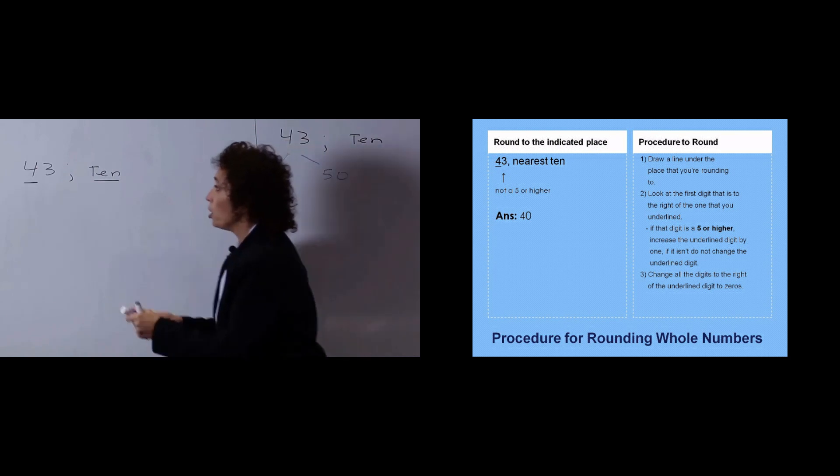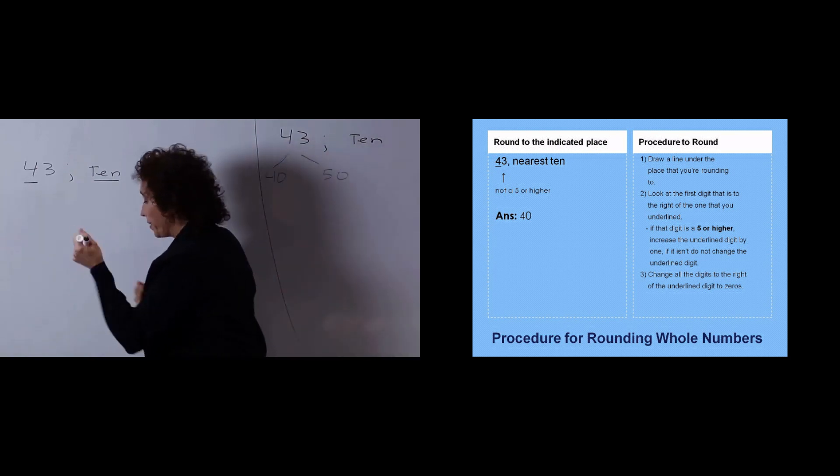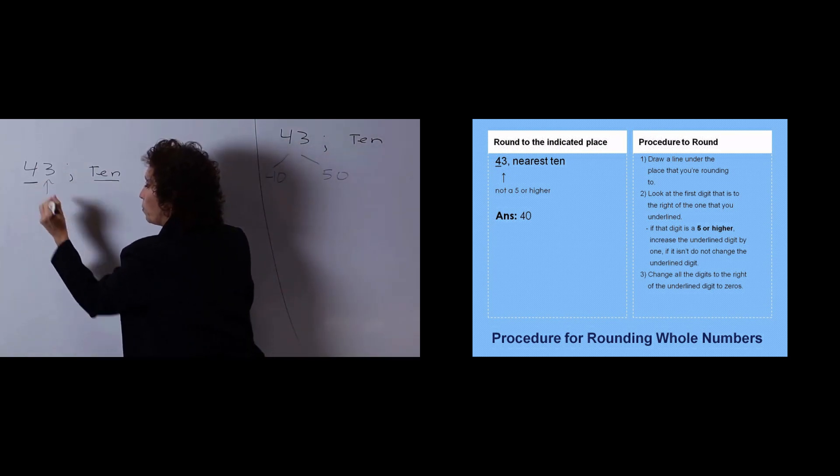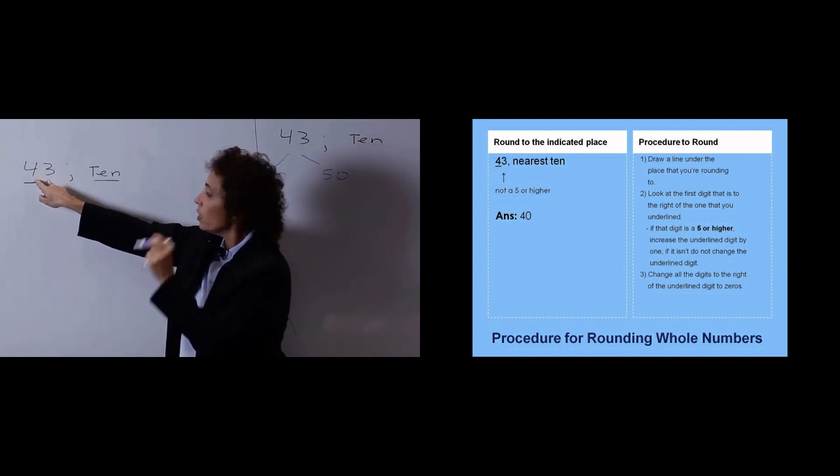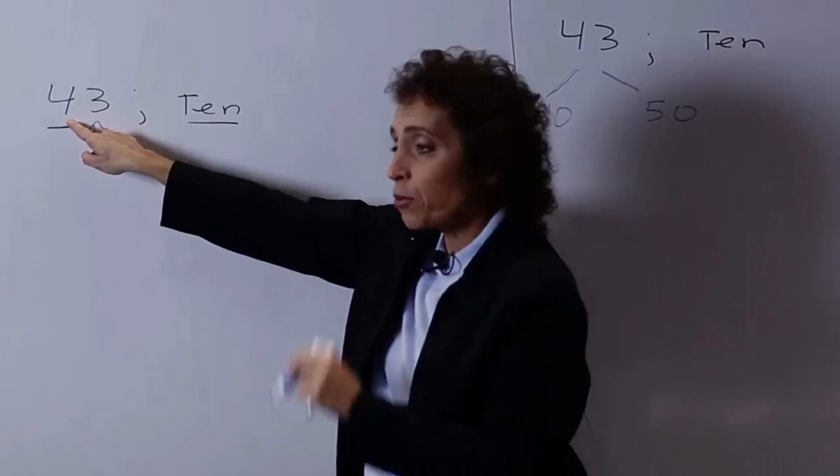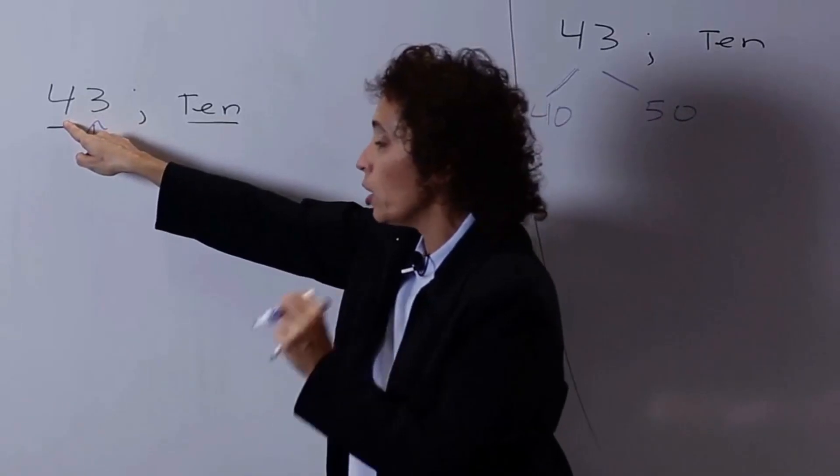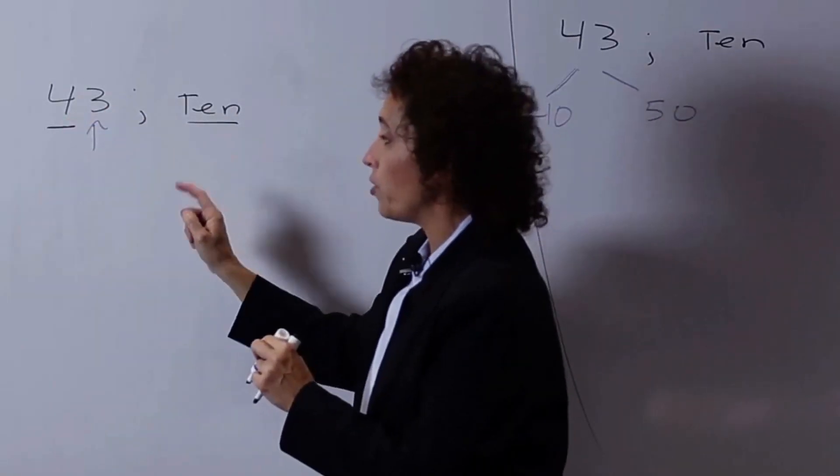Then I'm going to look at the number to its immediate right. If that number is a 5 or higher, we're going to raise that up by 1. If that number is not a 5 or higher, we're going to leave it alone. Then we're going to make all the other digits zeros.